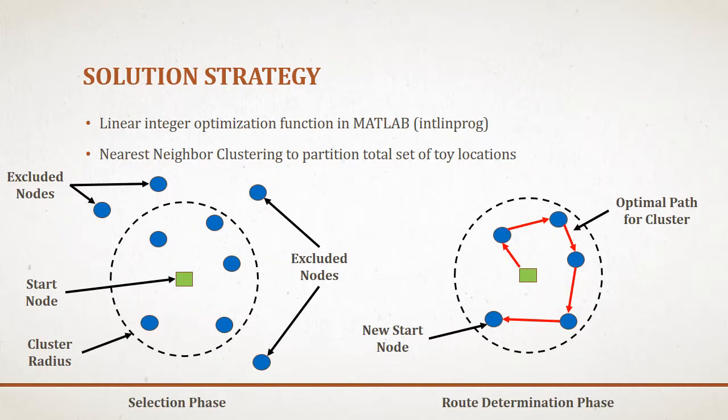It turns out that there are a lot of ways that you could solve this problem, so I immediately needed to start making some simplifications to bound it. I chose to use one of MATLAB's linear integer optimizer functions. In order to give MATLAB what it needed, I needed to come up with a strategy for choosing which nodes would be visited and in what order. For this project, I chose a form of nearest-neighbor clustering, in which I would find the closest toys to the starting point, find the optimum path between those toys, and then proceed along the optimum path to visit the appropriate toy bins before returning to the pickup.